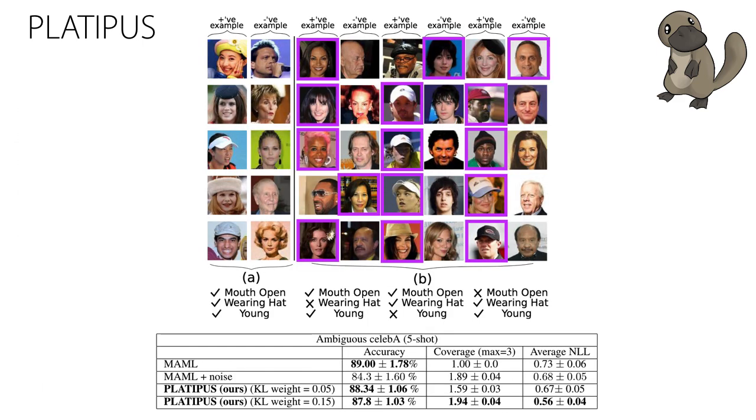We also propose a new few-shot learning benchmark based on the CelebA data set that particularly emphasizes the ability to handle ambiguity. Our approach is able to effectively trade off accuracy and coverage of modes while scaling to convolutional neural networks. For full results, see the paper.